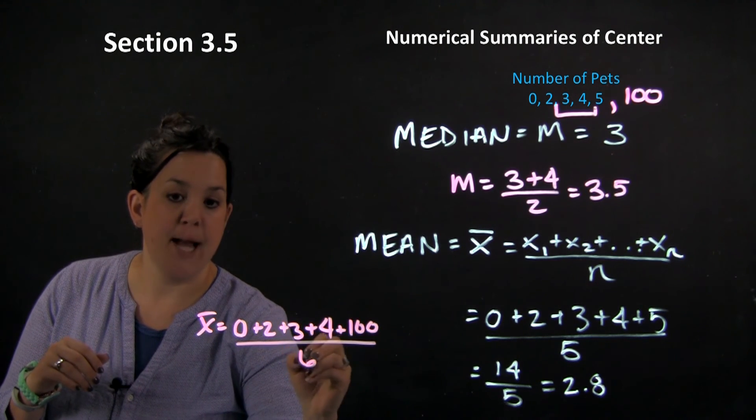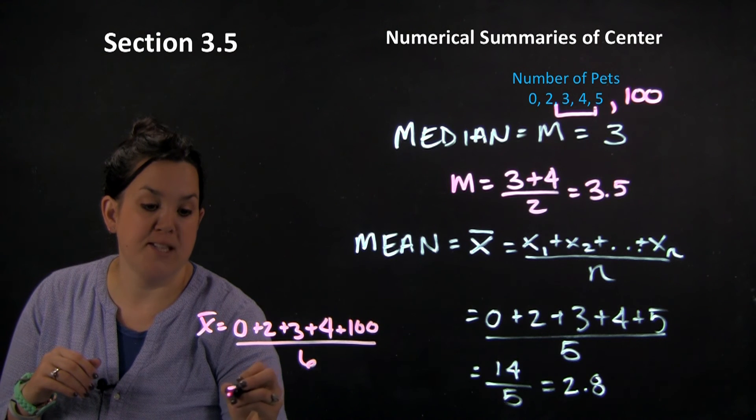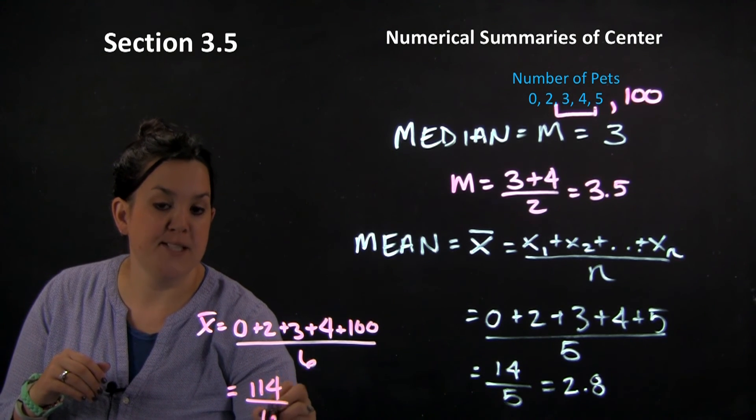This time, because we added an observation, it's going to be divided by 6. So I have 114 divided by 6.